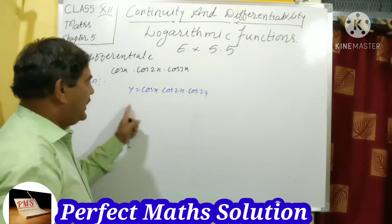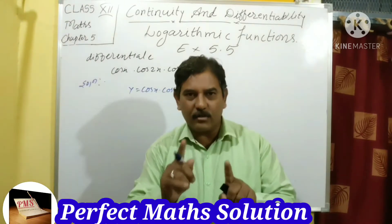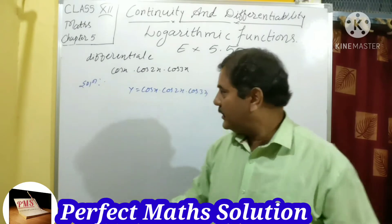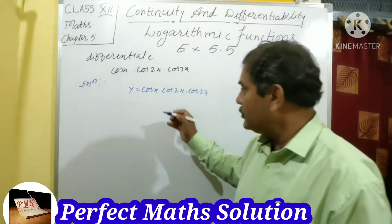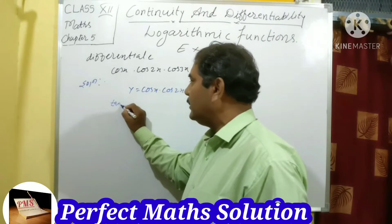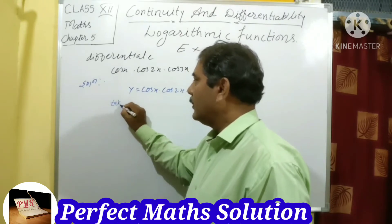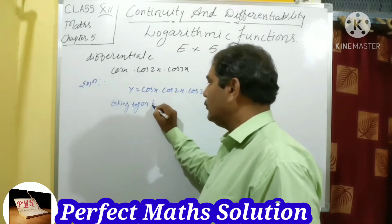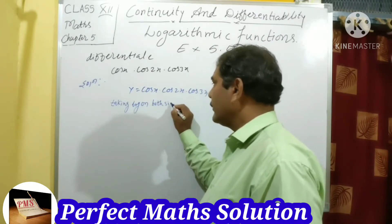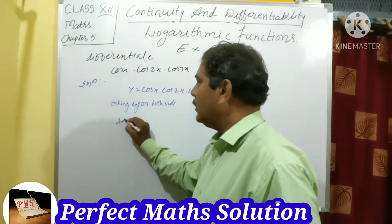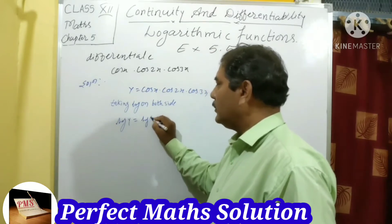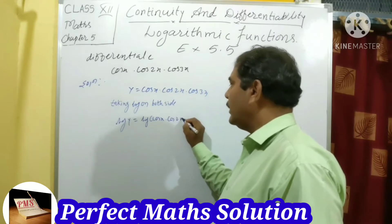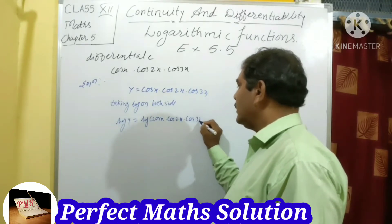Students, you need to separate cos x, cos 2x, and cos 3x. For separating them, you have to take the log on both sides. By taking log on both sides: